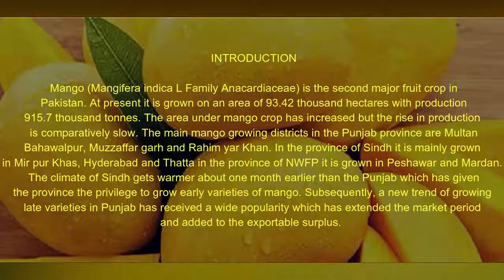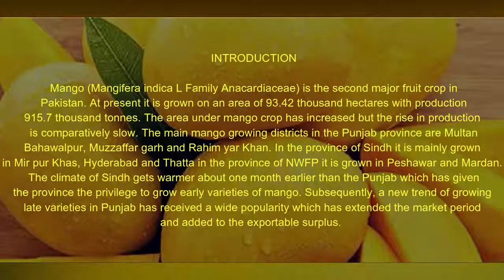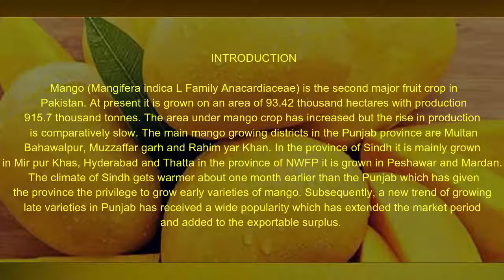The area under mango crop has increased but the rise in production is comparatively slow. The main mango growing districts in Punjab province are Multan, Bahawalpur, Muzaffargarh, and Rahim Yar Khan. In Sindh it is mainly grown in Mirpur Khas, Hyderabad, and Tando. In NWFP it is grown in Peshawar and Mardan. The climate of Sindh gets warmer about one month earlier than Punjab, which has given the province the privilege to grow early varieties of mango.